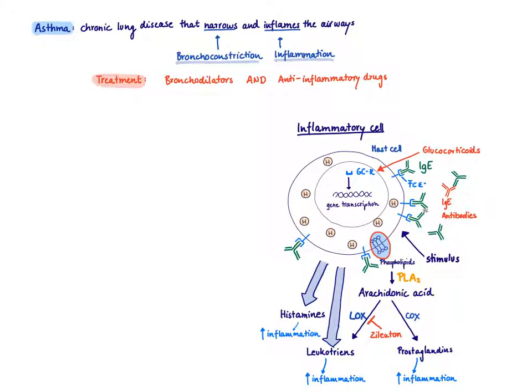Besides allergens, there are lots of other stimuli that can lead to mast cell degranulation, for example, cold or smoke. What happens if there's any of these stimuli? There's an enzyme going to be activated, which is called phospholipase A2. Phospholipase A2 cuts out of these phospholipids that are in any cell membrane arachidonic acid. Arachidonic acid can give rise to leukotrienes or prostaglandins via the enzymes LOX, lipoxygenase, and COX, cyclooxygenase.